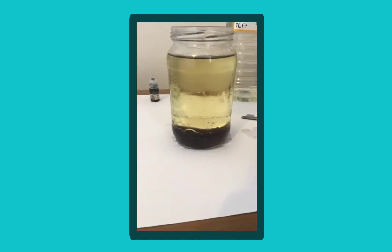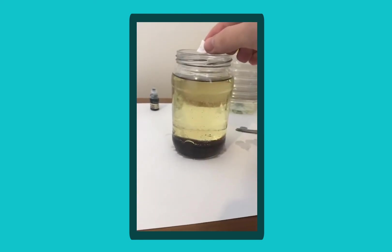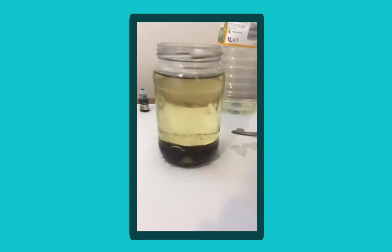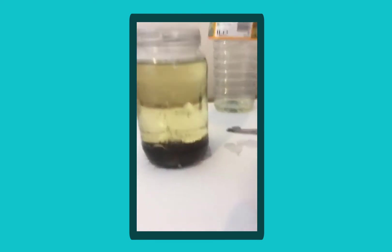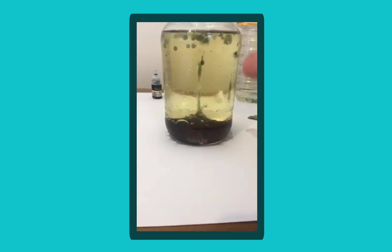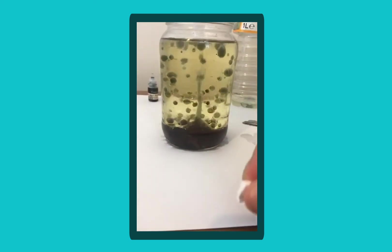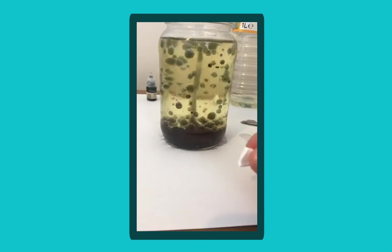So that should be your ready state and then you just simply drop in your Alka-Seltzer tablets or your baking soda and you'll see it starts to bubble and it should eventually, there you go, it takes that dye up and it circulates in the oil and then it settles down again.